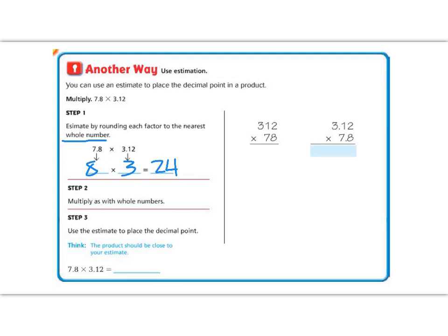So when we multiply, we should get an answer somewhere around 24. So if we get something in the thousands or we get something even in the ones, then we know we've done something wrong. So step two says multiply as we would with whole numbers.